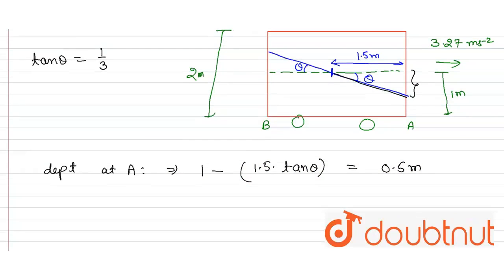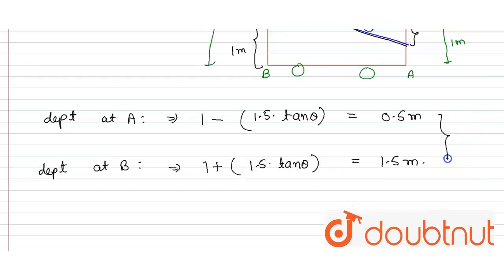Similarly, at point B, the depth will be 1 meter plus this distance. So depth at B will be equal to 1 plus 1.5 into tan theta, and this will come out 1.5 meter. So these are the answers. Thank you.